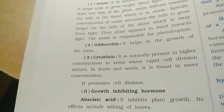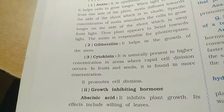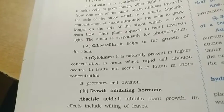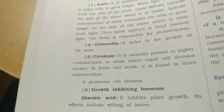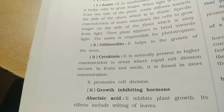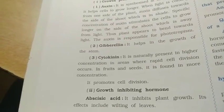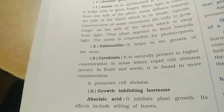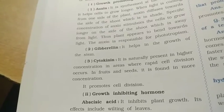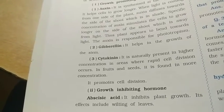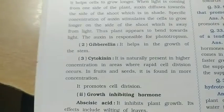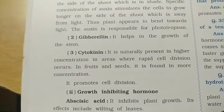Growth-inhibiting hormones inhibit plant growth. The growth-inhibiting hormone is called abscisic acid. It causes the wilting of leaves. So in summary: growth-promoting hormones are auxin, gibberellin, and cytokinin; and the growth-inhibiting hormone is abscisic acid.